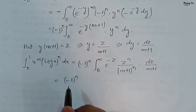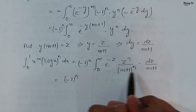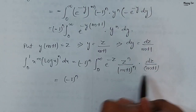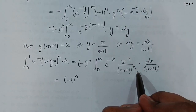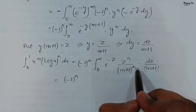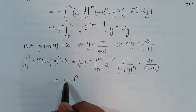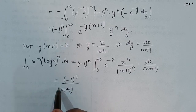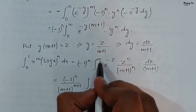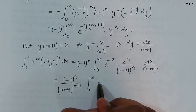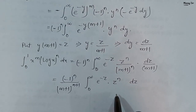Since m and n are constants with respect to z, we multiply the denominators to get (m+1)^(n+1), which is independent of z and can be taken outside the integral. This gives (−1)^n upon (m+1)^(n+1) times the integral from 0 to infinity of e^(−z) times z^n dz.